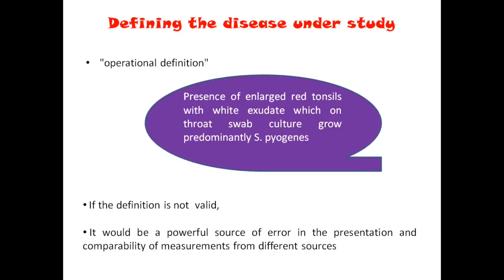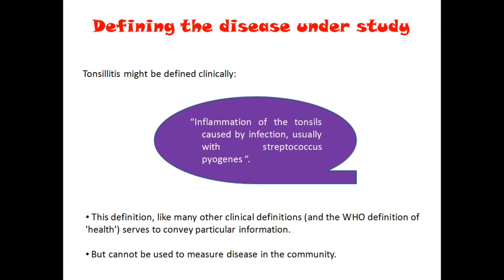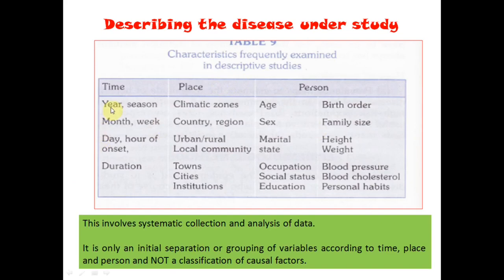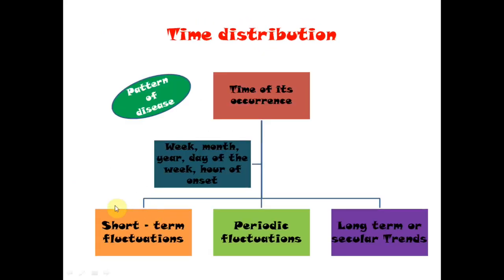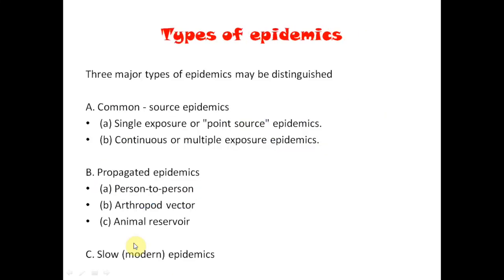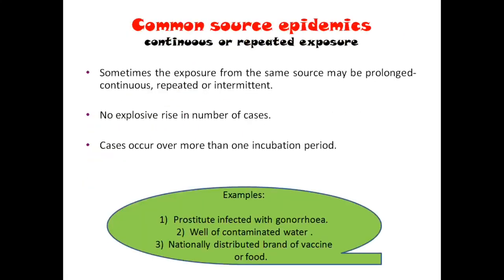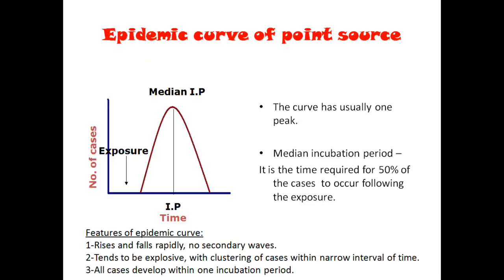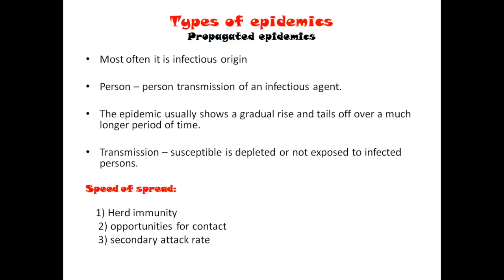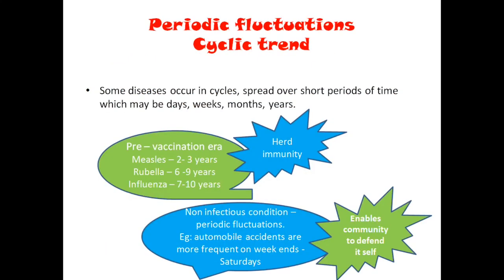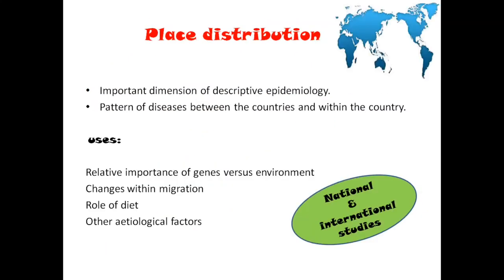A tricky part is the operational definition — changing the clinical definition to an operational definition. Under time, we study epidemics (short-term fluctuation), with types: common source (single exposure: Bhopal gas tragedy; continuous exposure: contaminated water well), propagated epidemics (person-to-person), and slow epidemics. Periodic fluctuation includes seasonal trends and cyclic trends. Long-term secular trends are the other part. Place distribution includes international, national, rural-urban, and local variations. Person distribution is based on age, sex, occupation, marital status, etc.